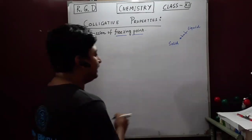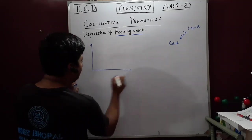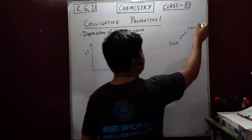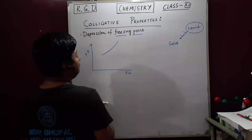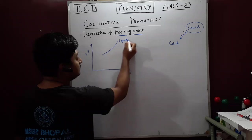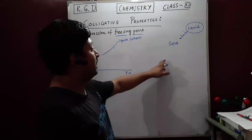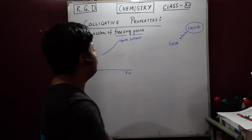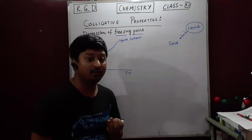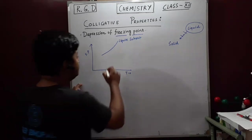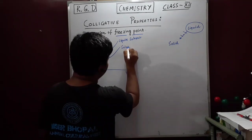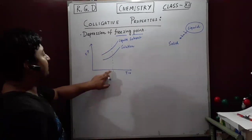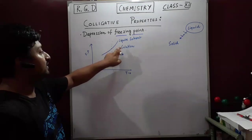If you compare, then what you will find is that for the solvent — if you plot the vapour pressure versus temperature for the liquid solvent — this is the vapour pressure for the liquid solvent. Now, when you add a solute substance — where the nature of the solute is non-volatile, non-electrolyte — this vapour pressure of the solution decreases. At a particular temperature, the vapour pressure of the liquid solvent decreases in the solution.